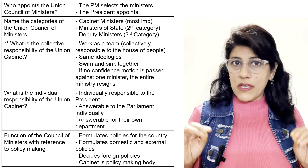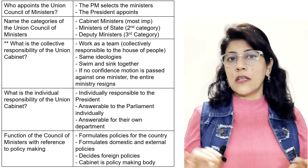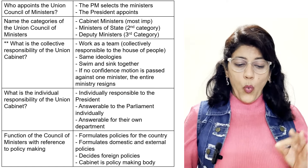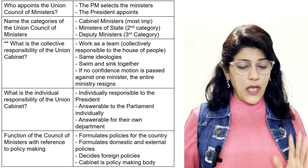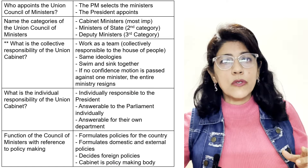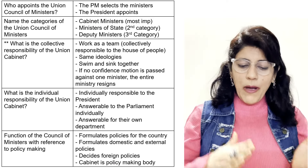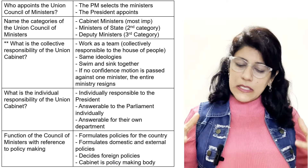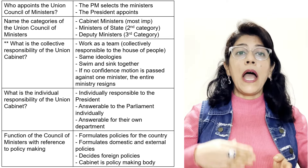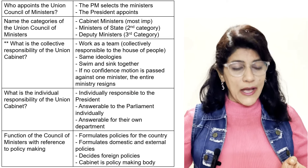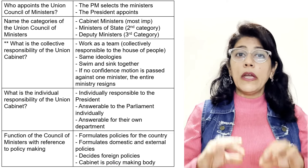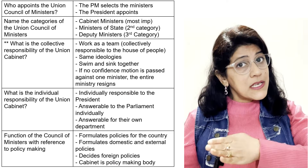What is the collective responsibility of the Union Cabinet? The cabinet works as a team, is collectively responsible to the House of People (Lok Sabha), shares the same ideologies, and swims and sinks together. If a no-confidence motion is passed against one minister, the entire ministry resigns. What is the individual responsibility of the Union Cabinet? Each minister is individually responsible to the President, answerable to the Parliament individually, and answerable for their own department.